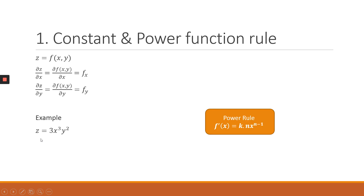To find the partial derivative with respect to x, we are going to use the power rule. The power rule tells us that when you differentiate with respect to x in a single variable situation, you keep the constant, multiply it by the initial power on x, then raise x to the power of n minus 1. Now that we have two variables explaining z, when you differentiate with respect to x, your y variable will also behave as a constant.